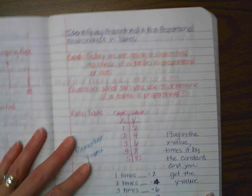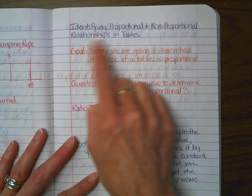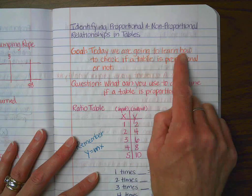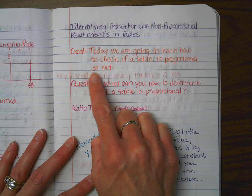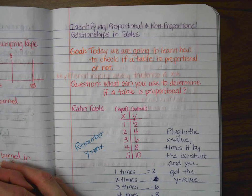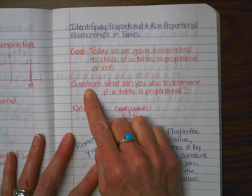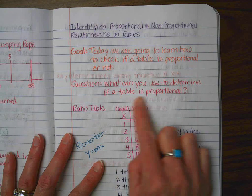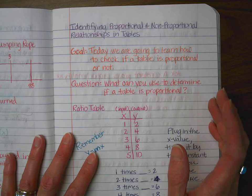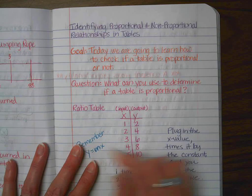Here we are. The title is Identifying Proportional and Non-Proportional Relationships in Tables. Our goal for today is to learn how to check if a table is proportional or not. Hopefully you're remembering what proportional means — we've been working on it for a couple of lessons. The question for today is: what can you use to determine if a table is proportional? There's one specific thing that if you find it, you know it's proportional; if you can't find it, you know it's not proportional.